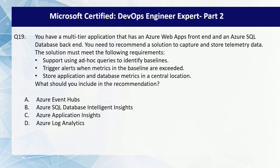Azure Event Hubs is for real-time event streaming such as IoT logs and telemetry ingestion, but does not provide querying capabilities or built-in alerting, so it is an incorrect choice. Azure SQL Database Intelligent Insights focuses only on database performance tuning and anomalies in SQL Database, not full application telemetry. Azure Application Insights is great for monitoring web applications but does not store SQL database metrics centrally. The correct choice is option D: Azure Log Analytics, which stores application and database metrics in a single location. You can use KQL to analyze and establish baselines, and Log Analytics can trigger alerts when metrics exceed thresholds.